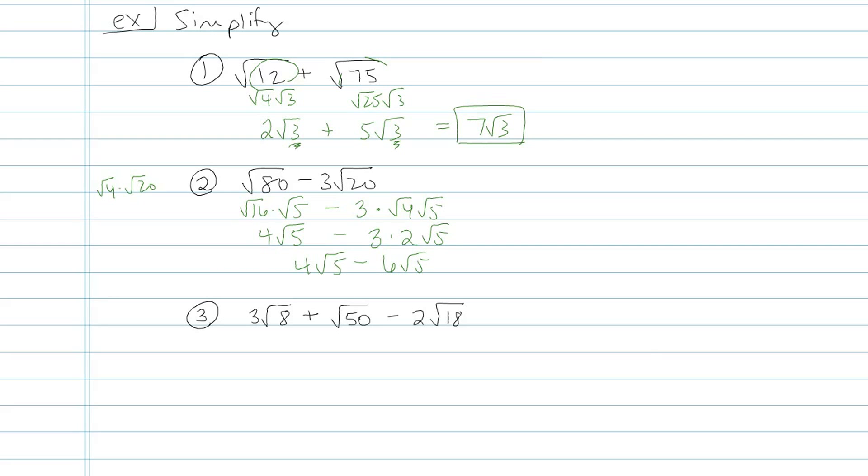Okay, so I have 4 root 5 minus 6 root 5. That's going to be negative 2 root 5. I could combine those because they were both root 5's.